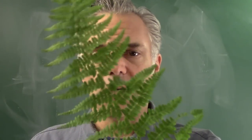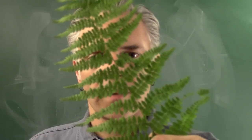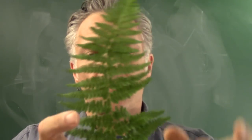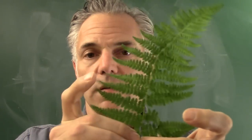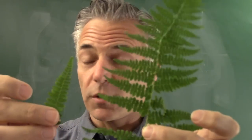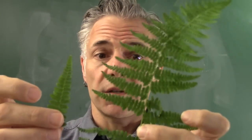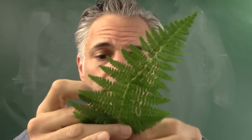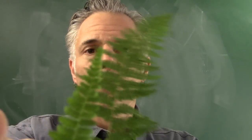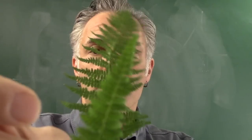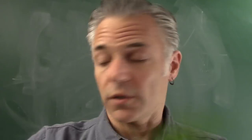A classic example is this fern. A fern is made up of smaller shapes that look like a fern. So these two things look not identical, but they're very similar shapes. It's a shape that's made up of shapes that are similar to it.